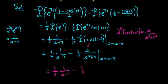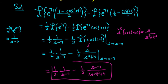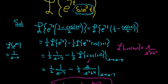So this is 1 over 2 times 1 over s minus 7, minus 1 over 2. Then we have s minus 7 over, and then s minus 7 squared plus 4. And that would be the Laplace transform of e to the 7t times sine squared of t.